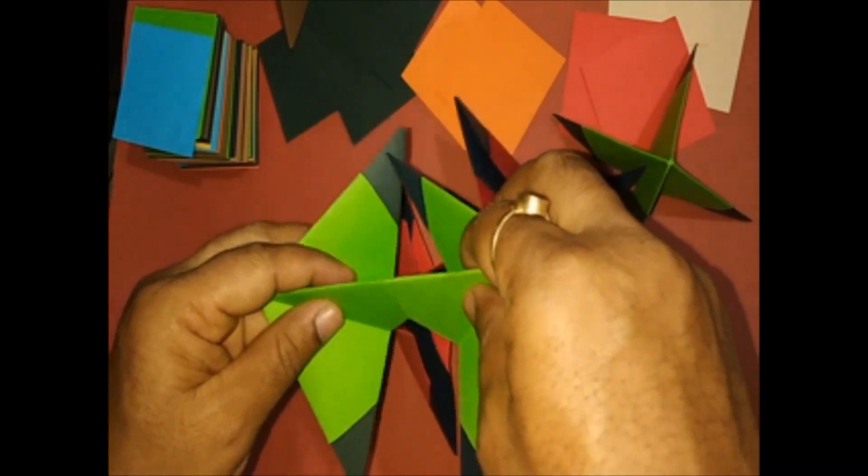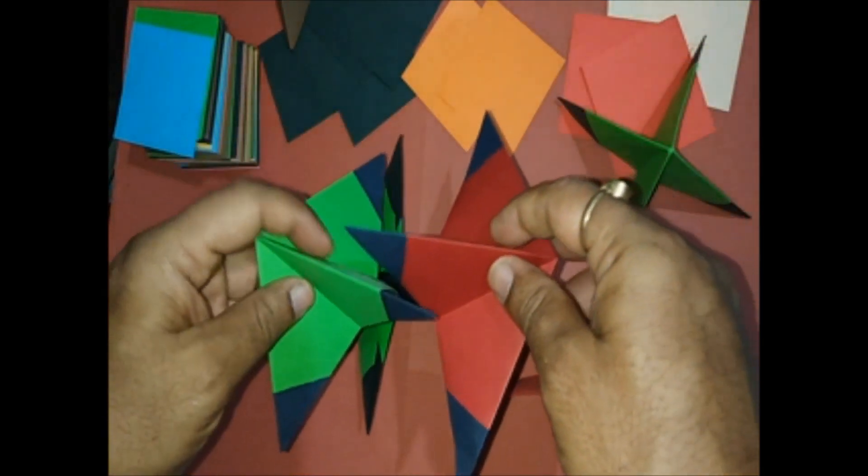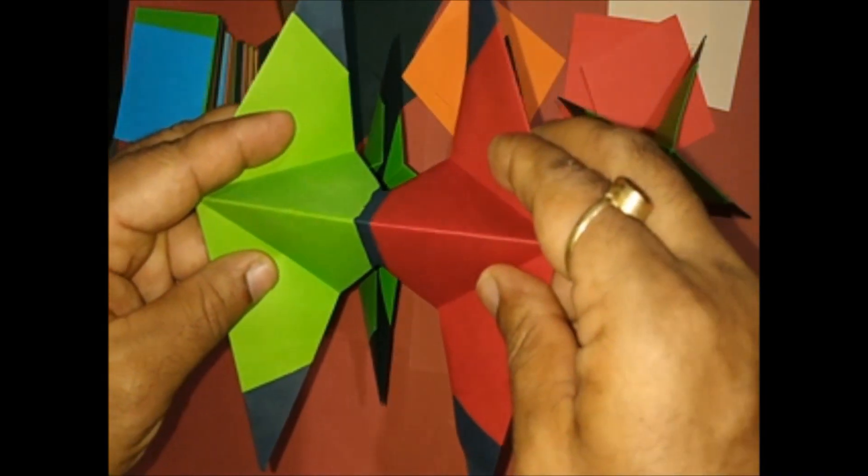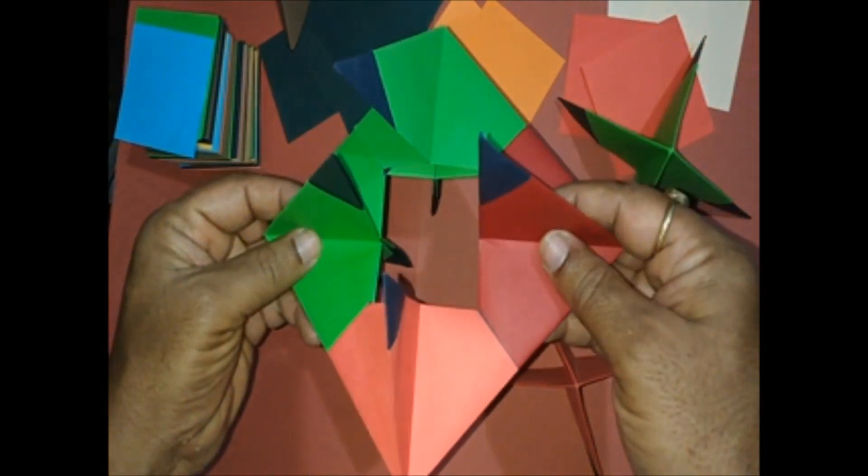Now we are seeing that four units are assembled together. And we have four flaps on either side.